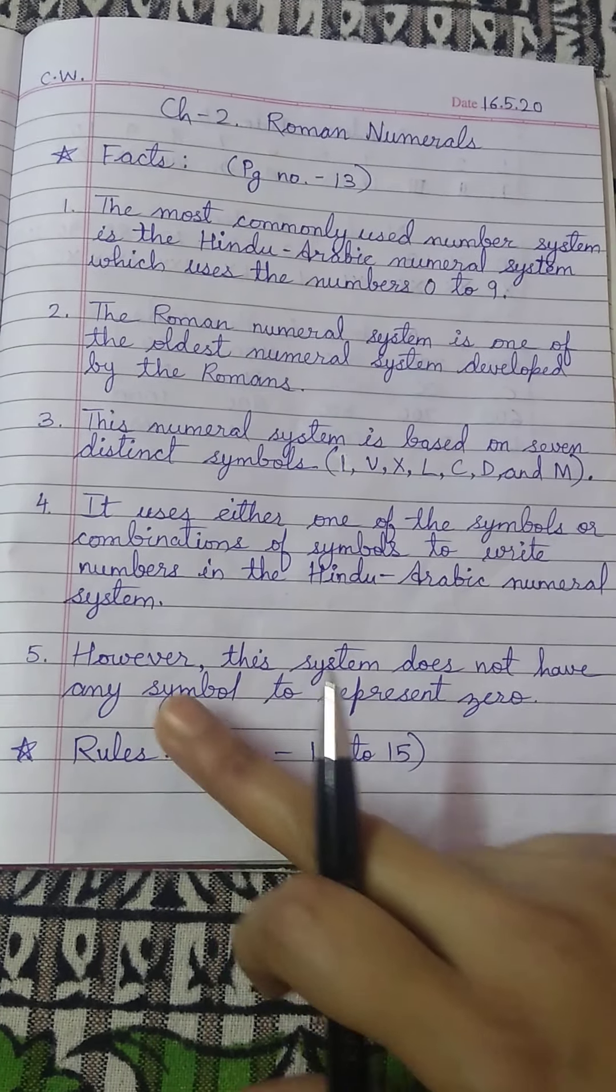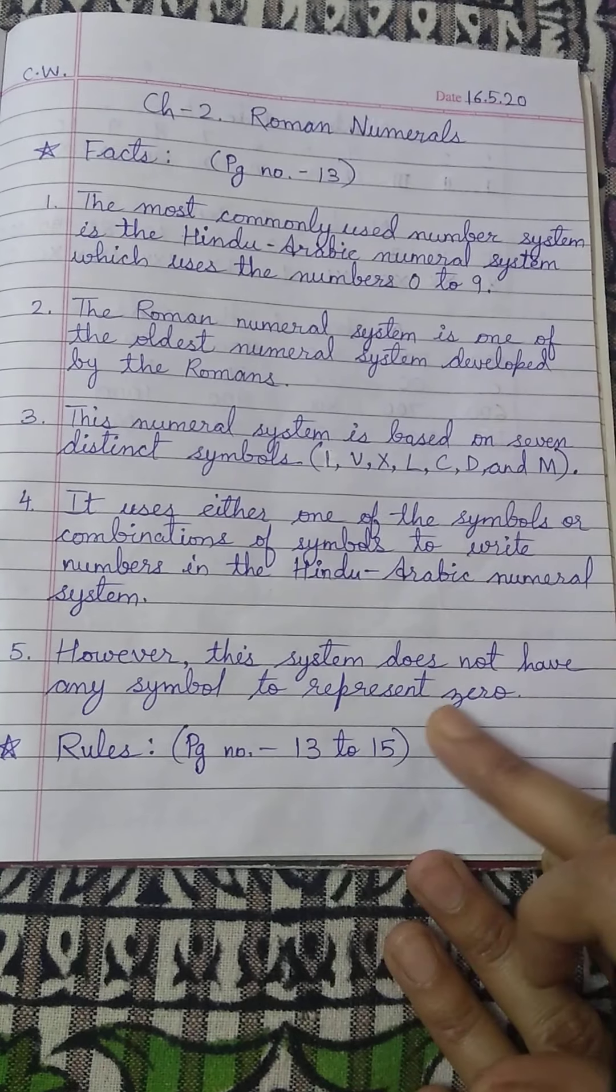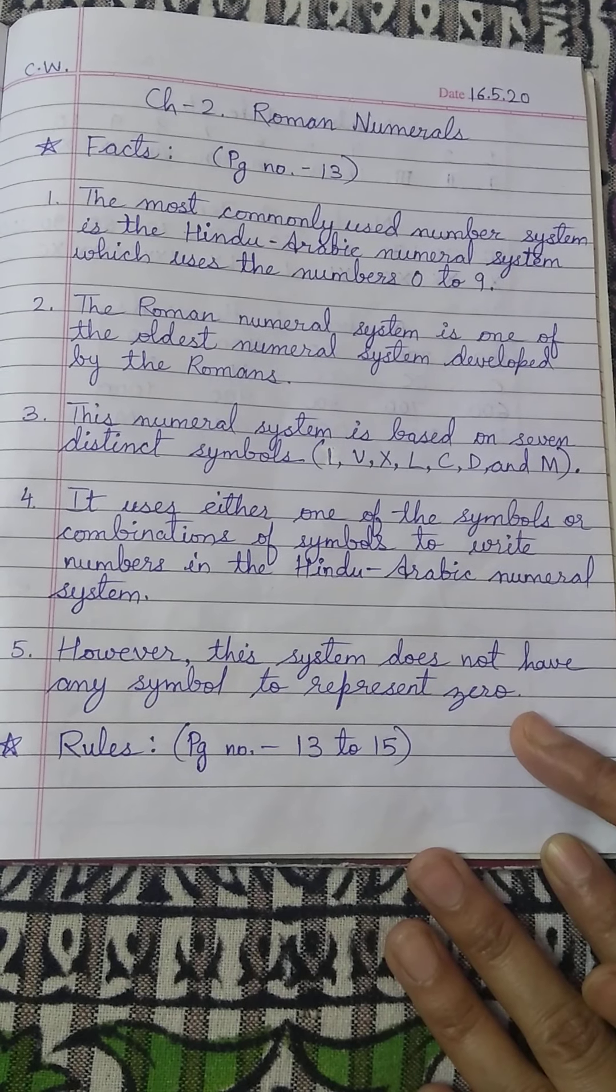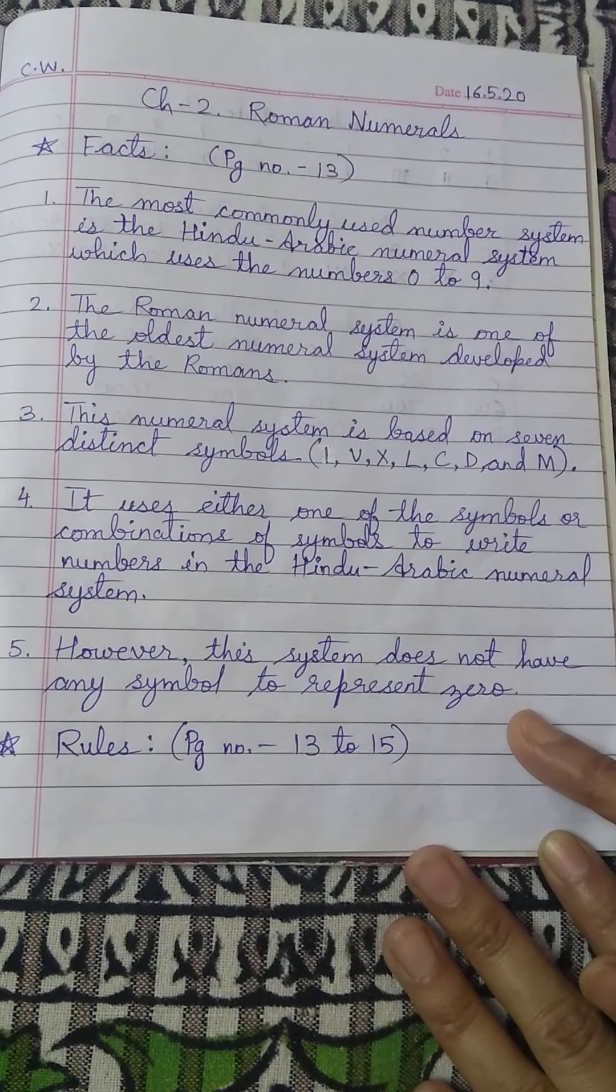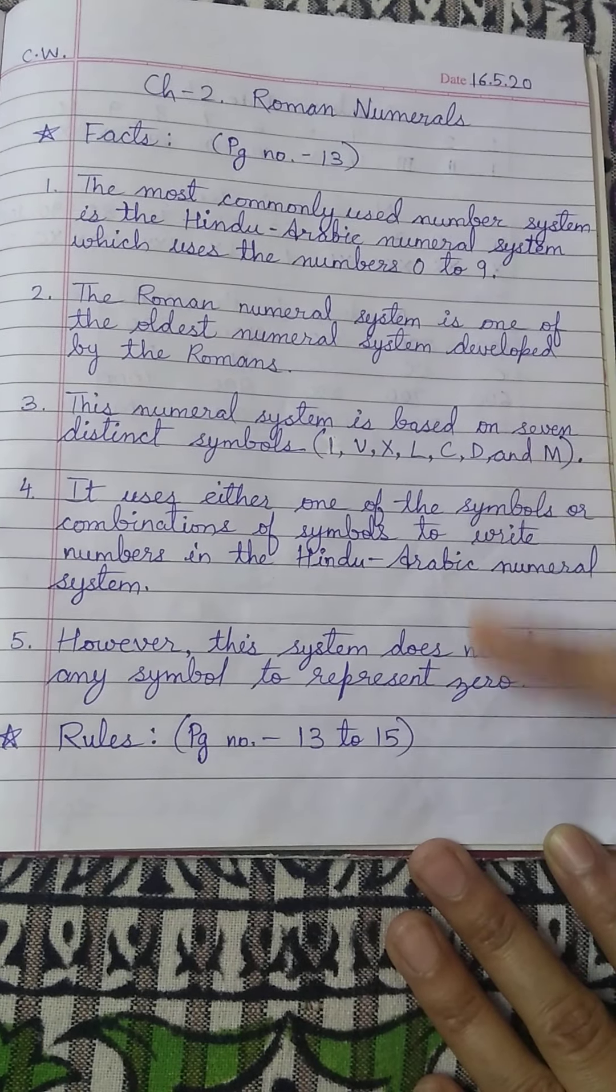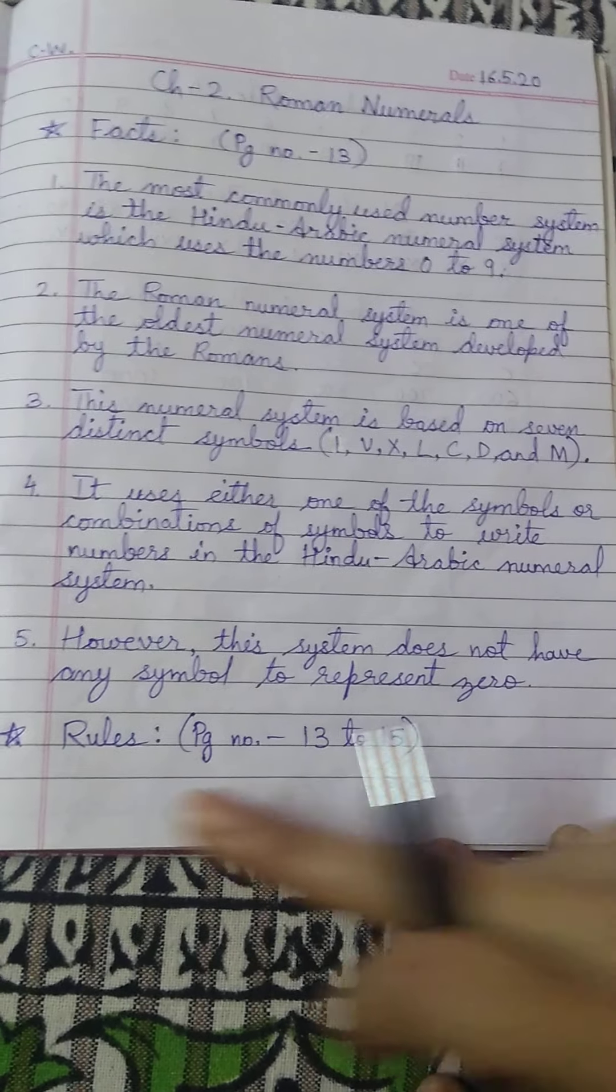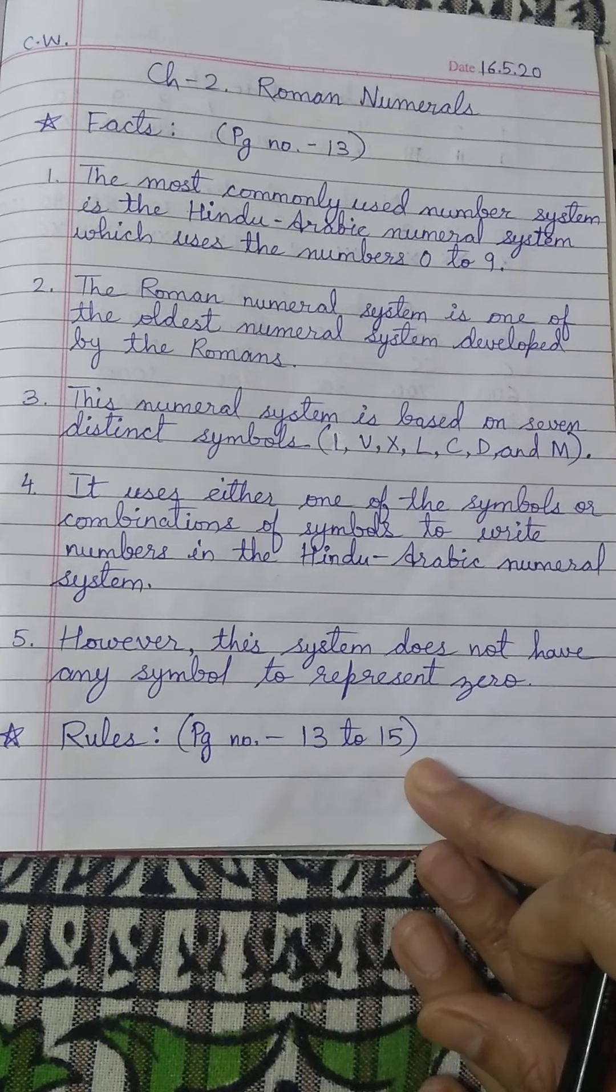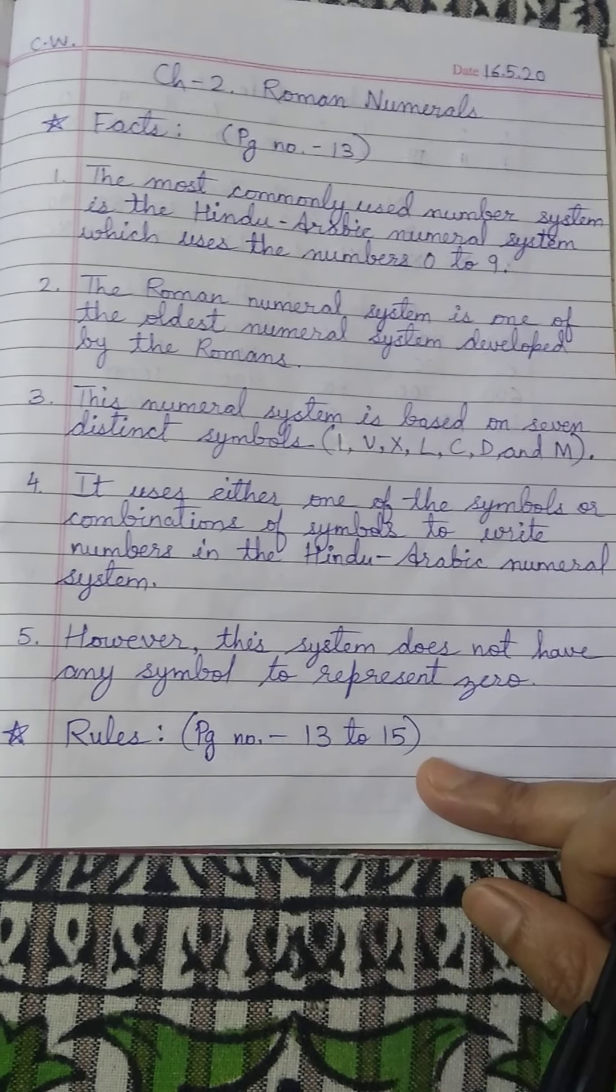And to write in Hindu Arabic numeral system. Number 5 fact is however this system does not have any symbol to represent 0. Students, unlike in Hindu Arabic numeral we have a digit 0, but there is no particular symbol in roman numeral to show 0. After that I hope this will come in one page. You will go to the next page and write rules.